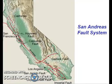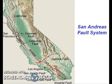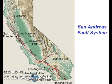Let's look closer at the San Andreas Fault system. We mentioned previously that the San Andreas Fault marks a plate boundary between the Pacific plate and the North American plate, and that the Pacific plate is moving to the northwest relative to the North American plate. Thus, the San Andreas Fault is an example of a right-lateral strike-slip fault.